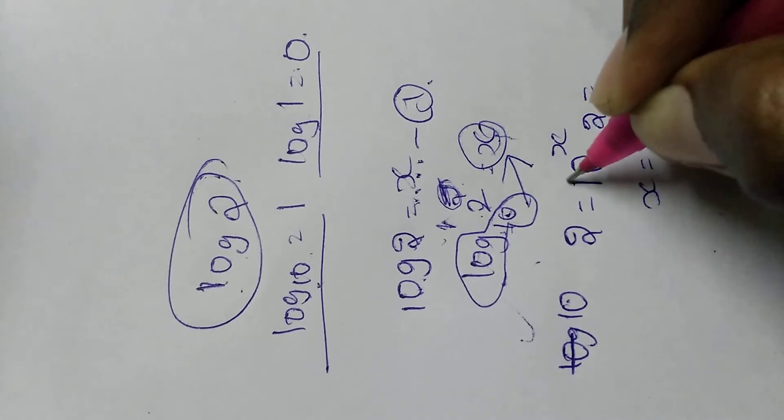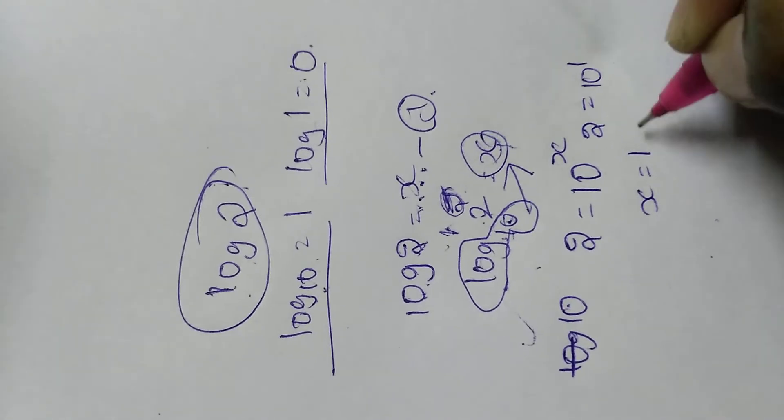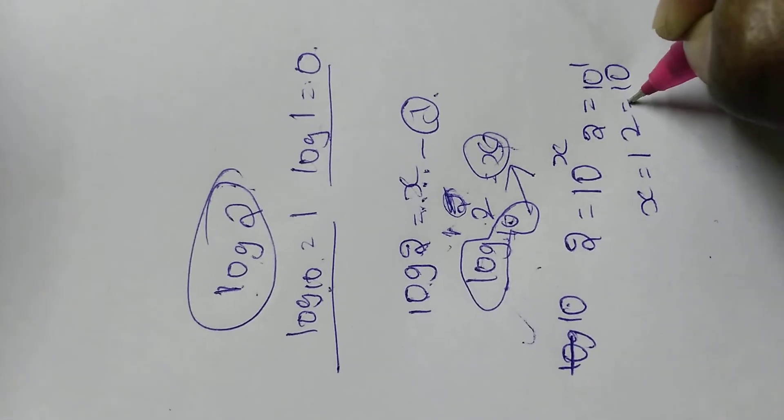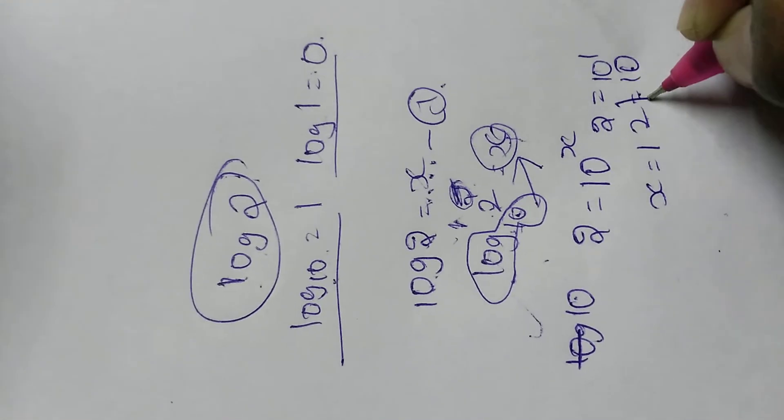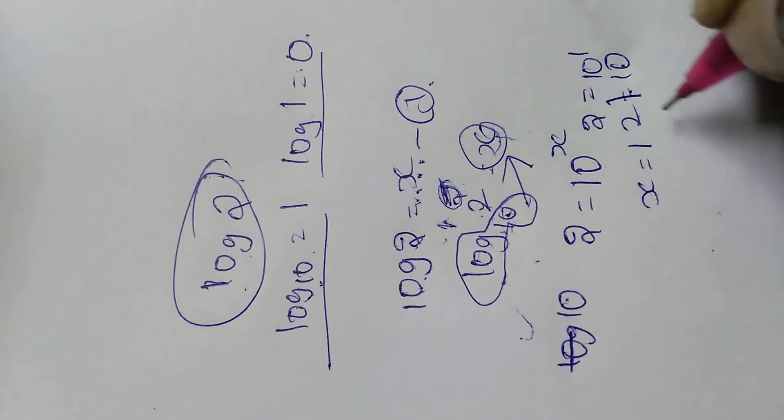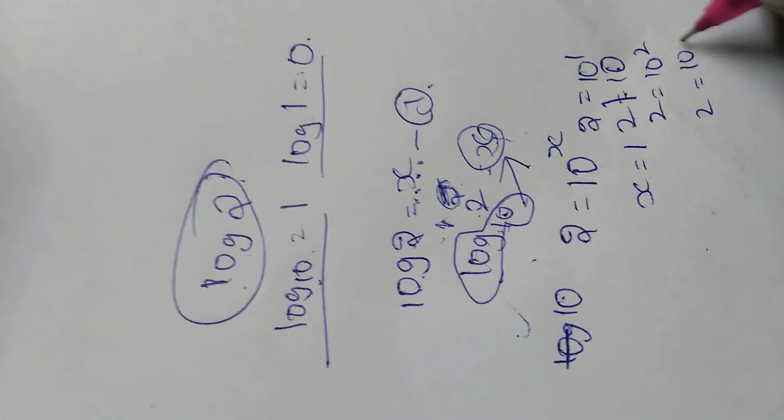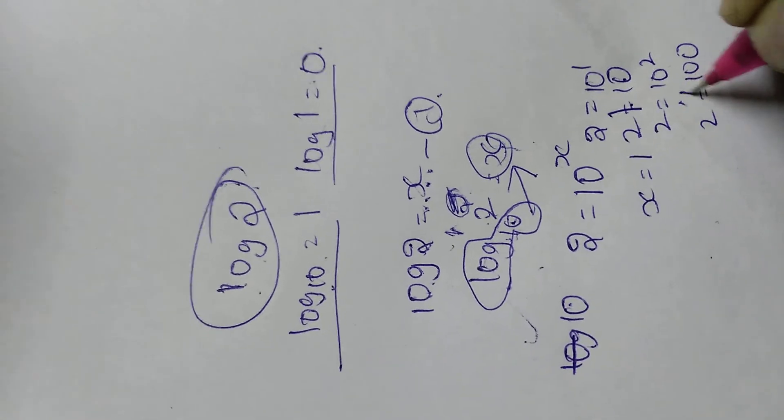If you assume x value as 1, 2 equals to 10 power 1, that is 2 equals to 10. But is 2 equals to 10? No, 2 is not equals to 10. If you assume x value 2, 2 equals to 10 power 2, that is 2 equals to 100. No, it is also not equal.